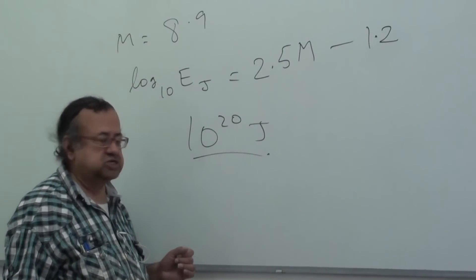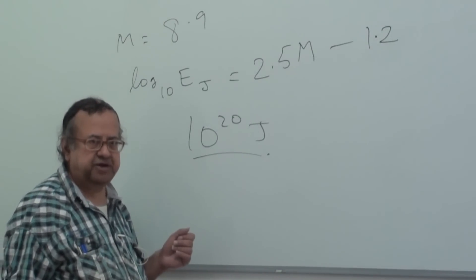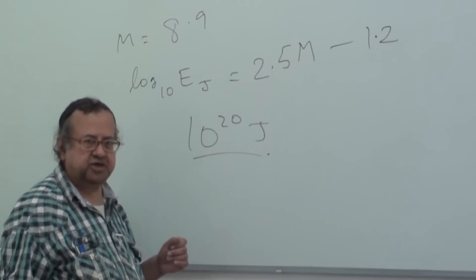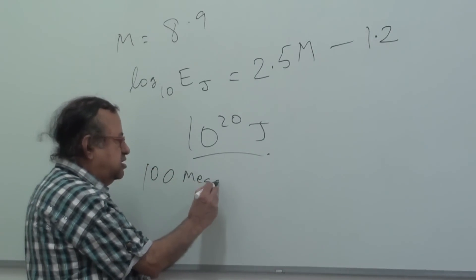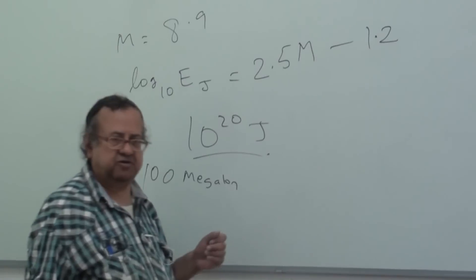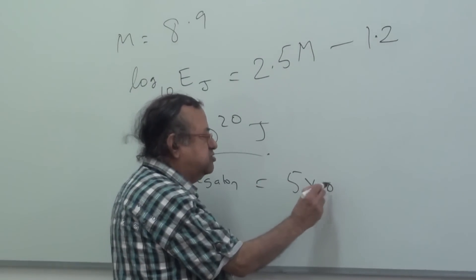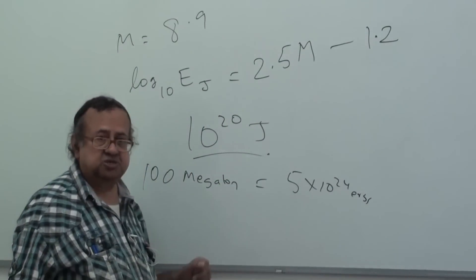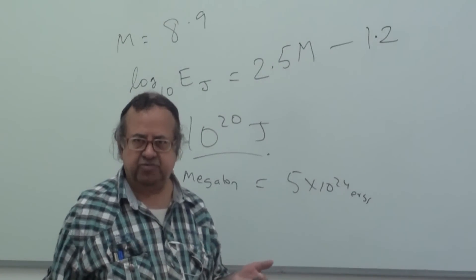So this works out about if you take the typical 1 megaton nuclear weapon, this works out the intensity of about 50,000 nuclear weapons. The most powerful nuclear weapon tested so far, Russia once tested a 60 megaton nuclear. So that's about 5 times 10 to the 24 joules.